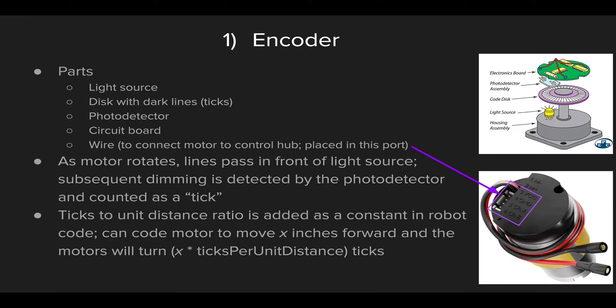So first we have the encoder. The encoder has five main parts: there's a circuit board, a disc with ticks on it — which are those dark lines — there's a photo detector, and a small light source, which is just a small LED, as well as a wire to connect your encoder to the control hub.